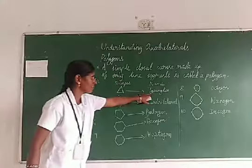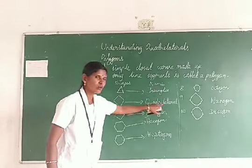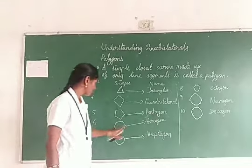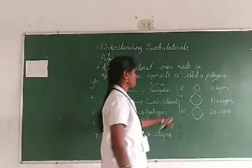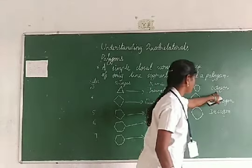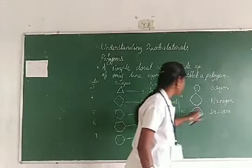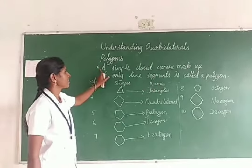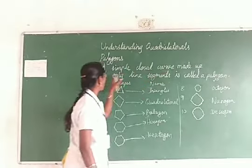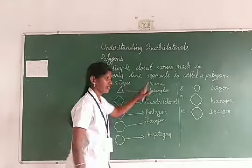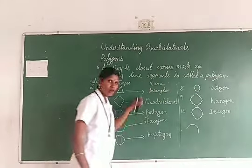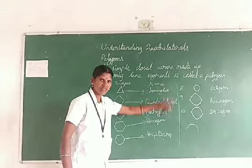So, if there are three sides, that is called a triangle; four sides — quadrilateral; five sides — pentagon; six sides — hexagon; seven sides — heptagon; eight sides — octagon; nine sides — nonagon; ten sides — decagon. This is the classification of polygons. A simple closed curve made up of only line segments is a polygon. Classification of polygons — types of polygons.